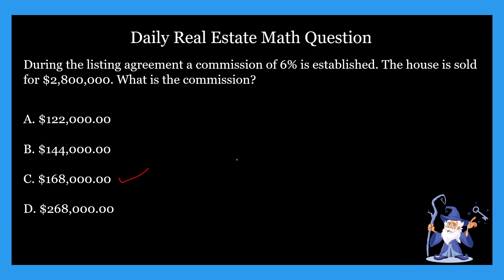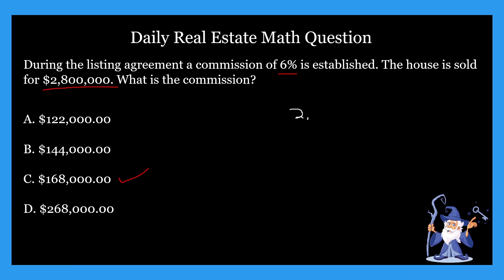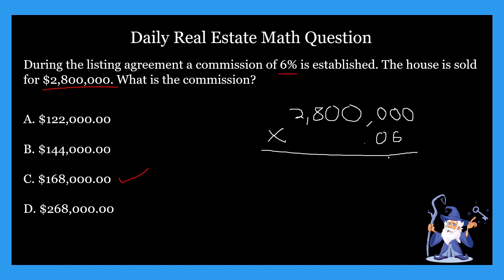Okay, so how did we figure that out? Well, this is very similar to the question that we saw two days ago, and this is a standard commission problem. So what are we doing in this one? We're going to be multiplying $2.8 million by the 6%, or 0.06. So we do $2.8 million multiplied by 0.06, which is a pretty standard commission rate, and that gives us $168,000.